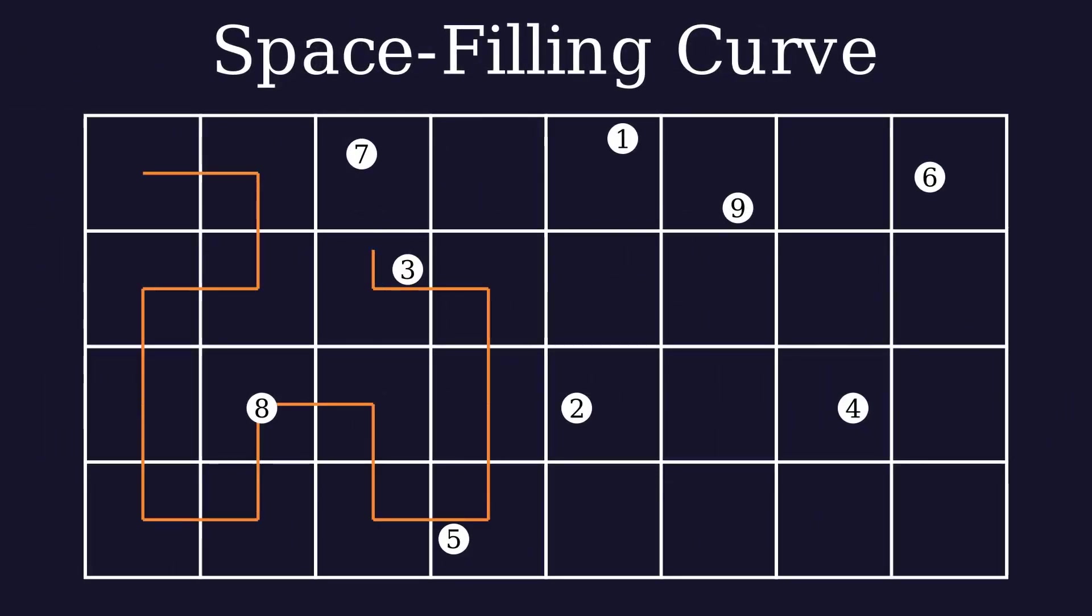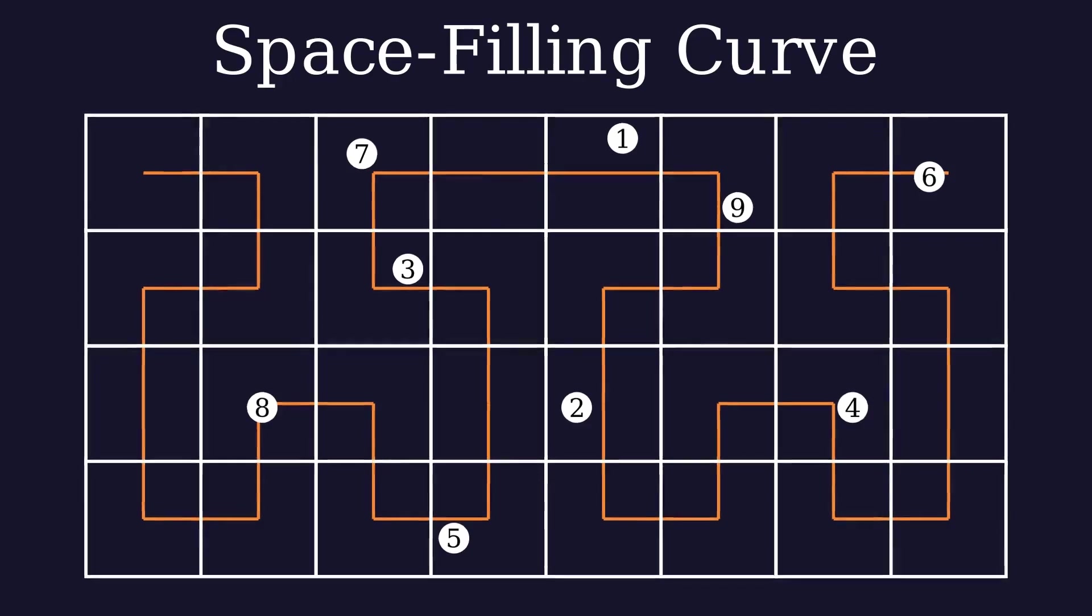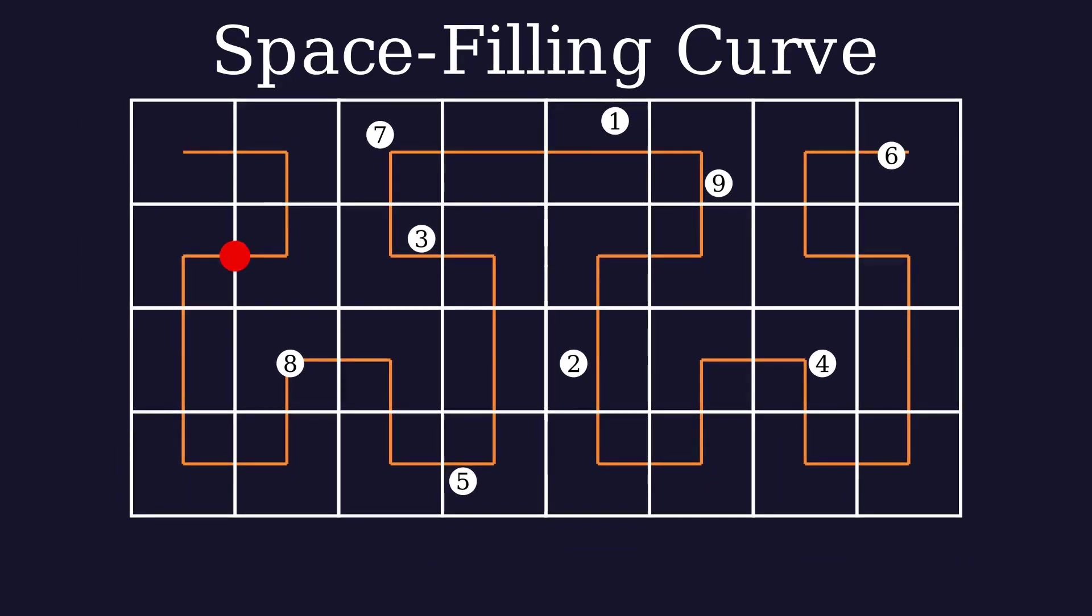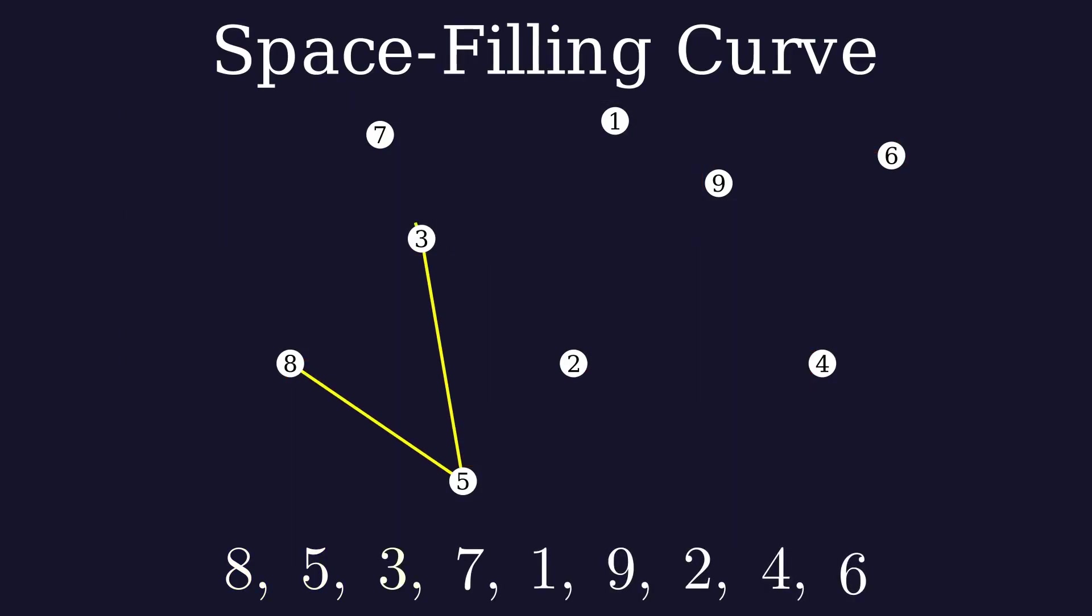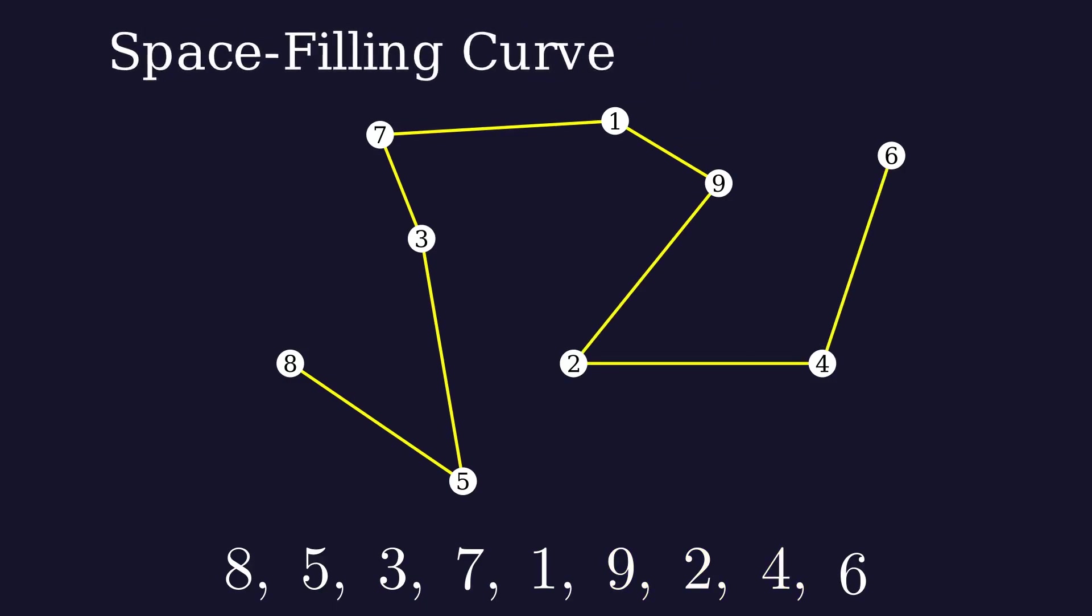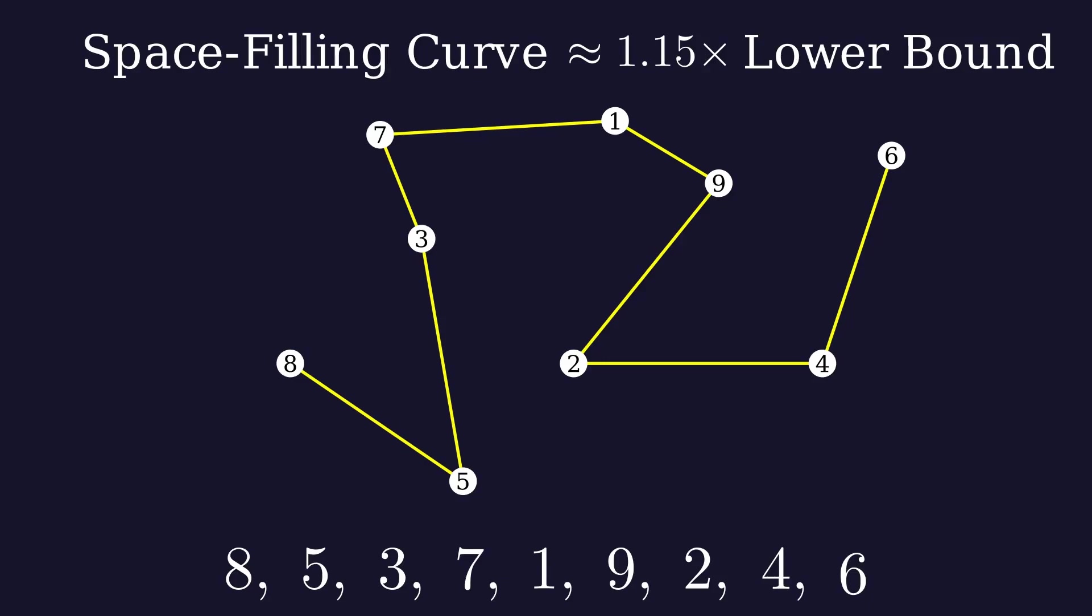We draw the curve on our grid. Now we just follow the curve and order the cities we encounter. The paths we get from using space-filling curves are on average about 15% longer than the lower bound.